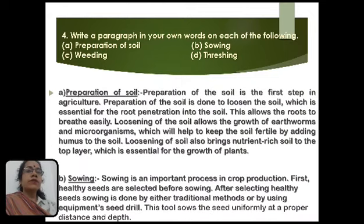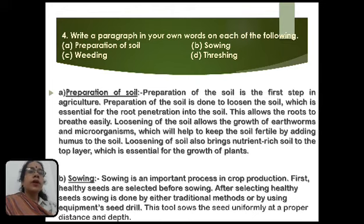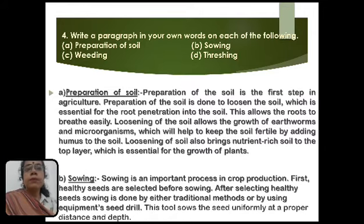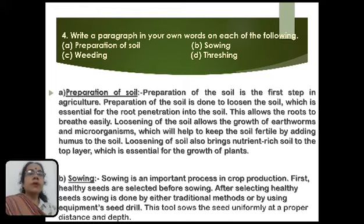The next question asks us to write a paragraph on each of the following. First, preparation of soil. Preparation of soil is the first step in agriculture, done to loosen the soil, which is essential for root penetration. This allows roots to breathe easily. Loosening of soil allows the growth of earthworms and microorganisms, which keep soil fertile by adding humus. It also brings nutrient-rich soil to the top layer, essential for plant growth.